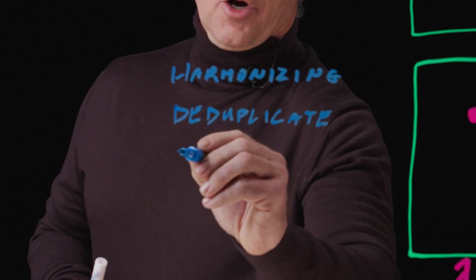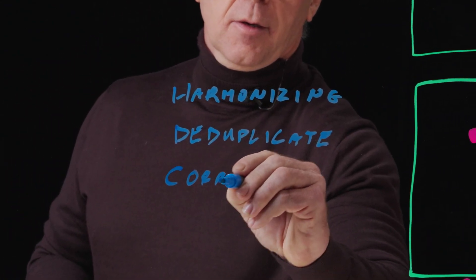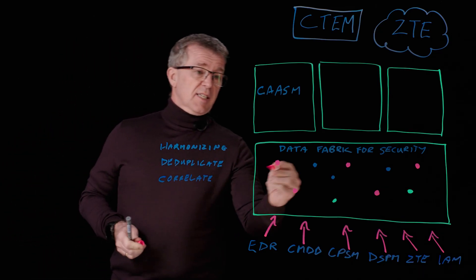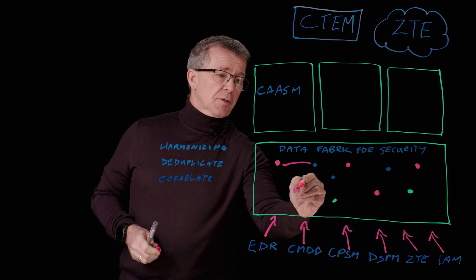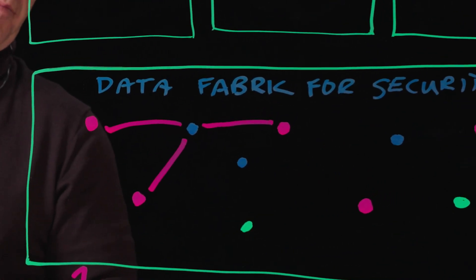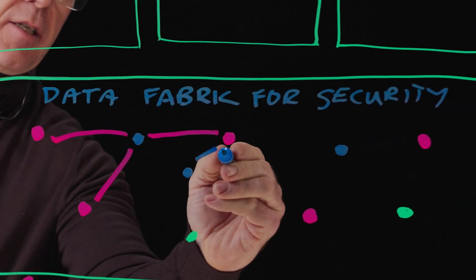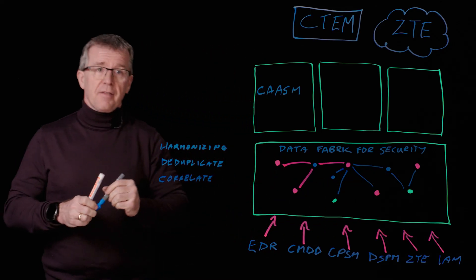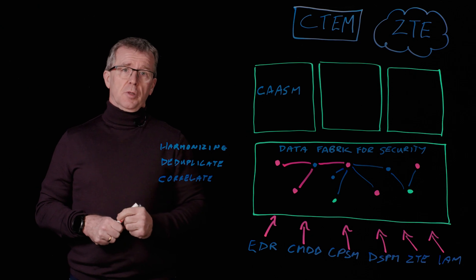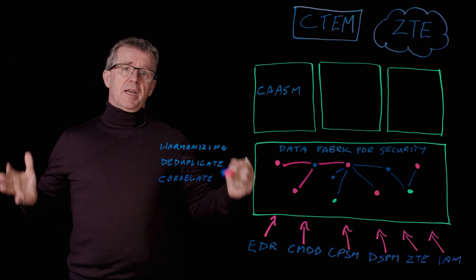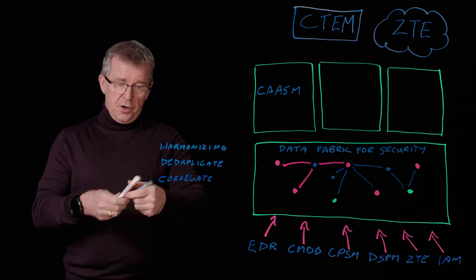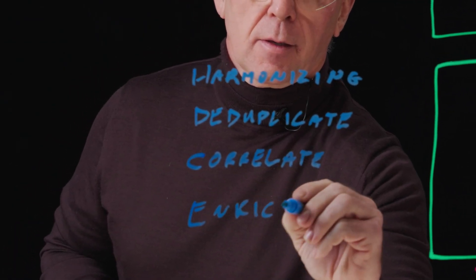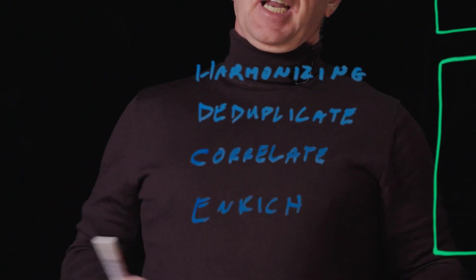Thirdly, we correlate. Here what we're doing is essentially connecting the dots. One data source might understand the IP address of that asset, another data source might understand that asset is a crown jewel. By combining all of that information together, we end up with an enriched view of our asset landscape.